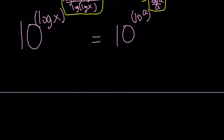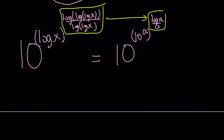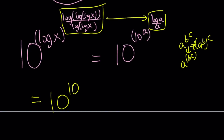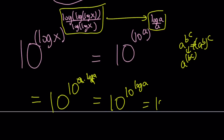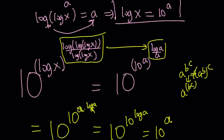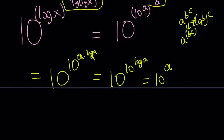Notice that we don't multiply the exponents directly — a to the power b to the power c is a to the power b^c, not a to the power bc. Since 10 to the power log a equals a (because log means base 10), this becomes 10 to the power a. And from our substitution, 10 to the power a equals log x. Therefore, our expression simplifies to log x.